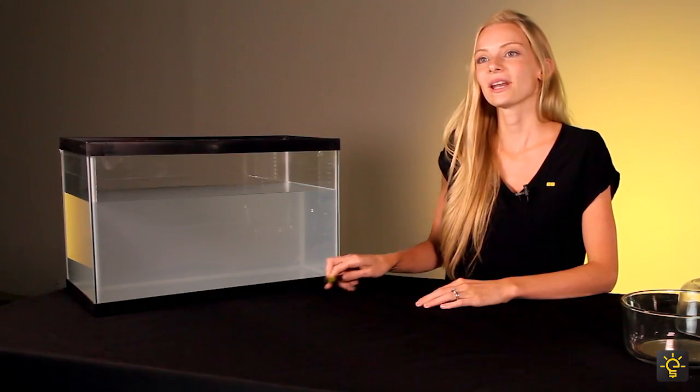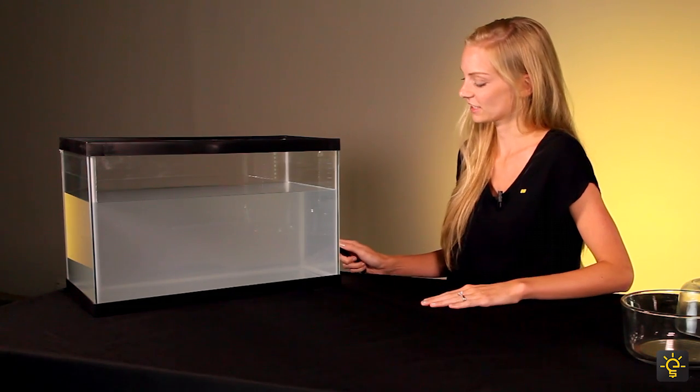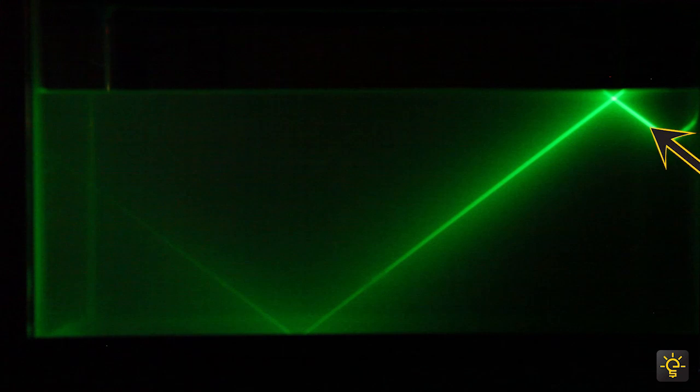Let's take a look at Total Internal Reflection. When I shine this laser into the fish tank at the critical angle, TIR takes place. The ray of light reflects off of the top of the water and down to the bottom of the fish tank.